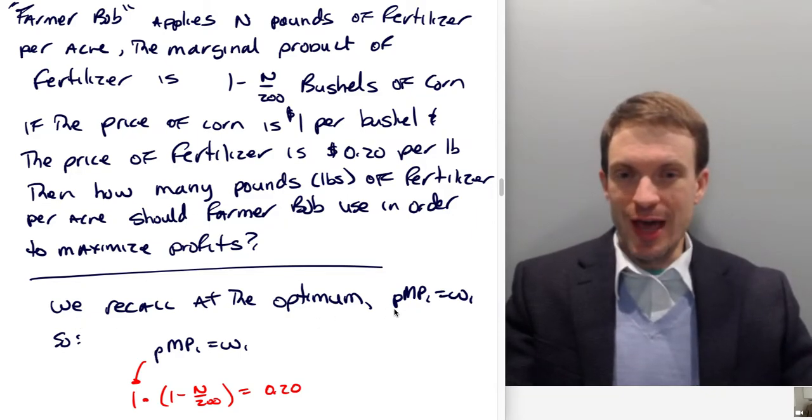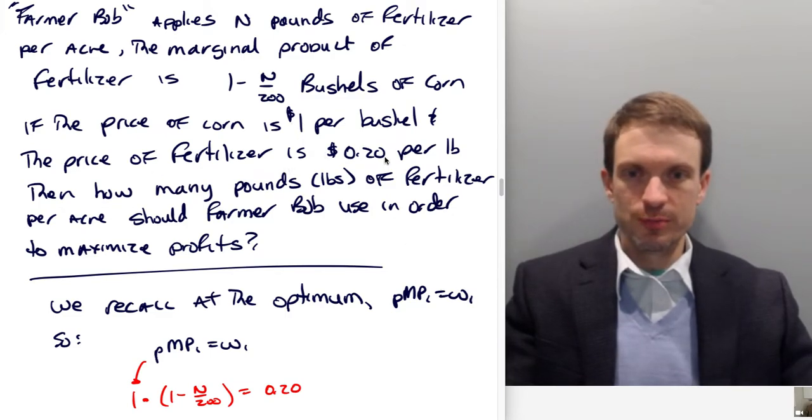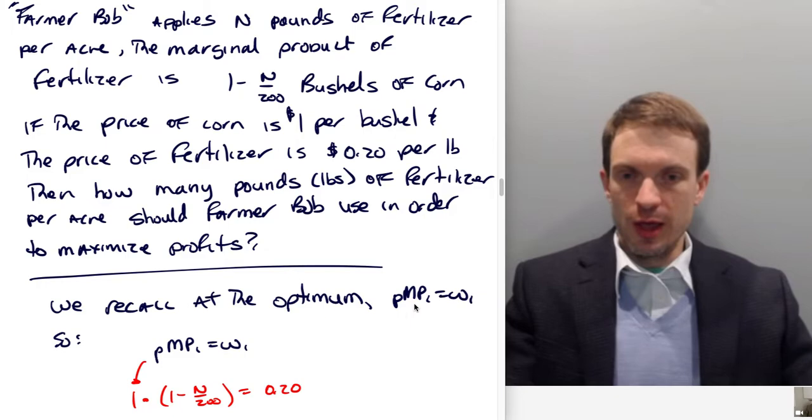Well, we got the output price—that was a dollar per bushel of corn. We've got the input price—that was 20 cents per pound. And we've got the marginal product, actually, right? The marginal product of fertilizer is 1 minus N over 200.